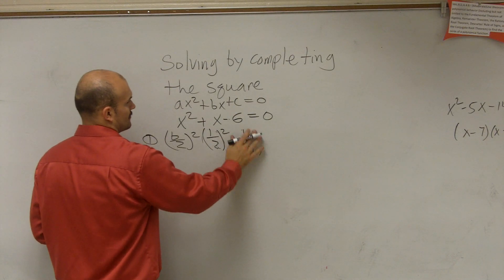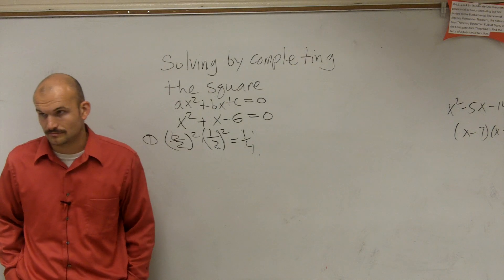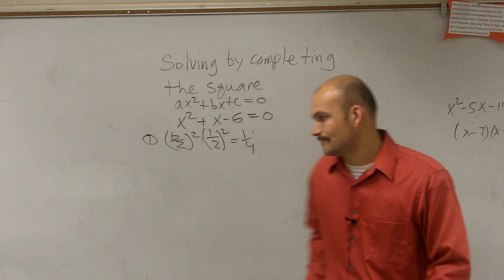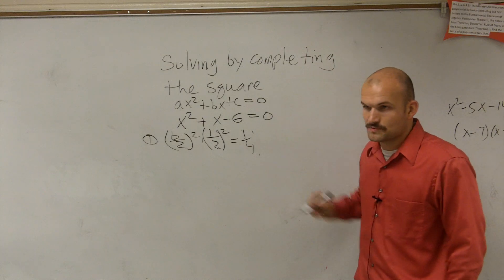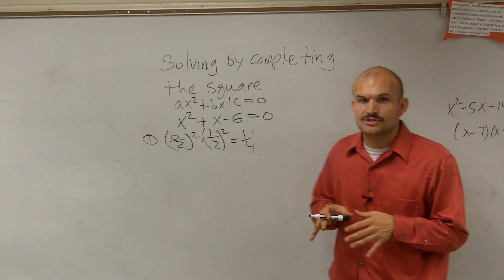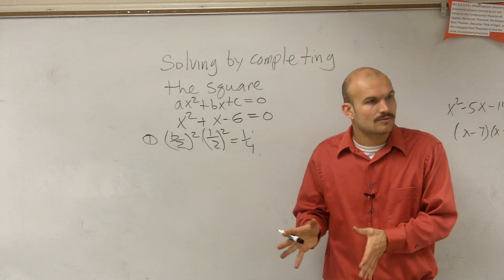1 divided by 2 squared is 1 fourth. Right? Thank you. So then that equals 1 fourth.